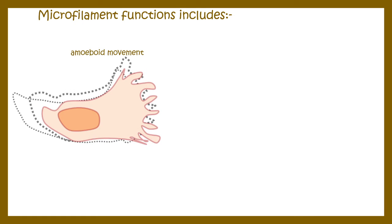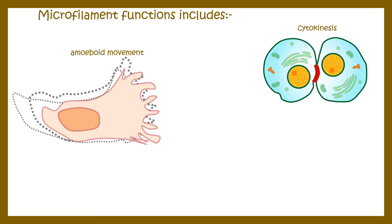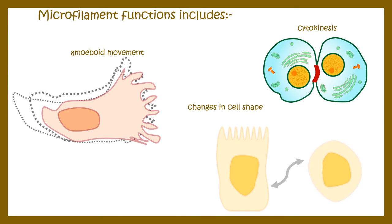Microfilament functions include cell motility — they are really involved in cellular movement. They also take an important role in cytokinesis, especially the pinching and separating of two cells, which is done by an actomyosin ring contraction mechanism. Lastly, change in cell shape is also modulated by microfilaments.